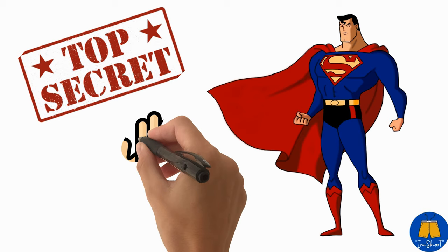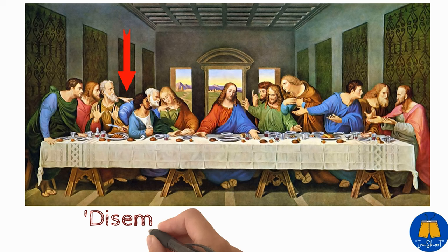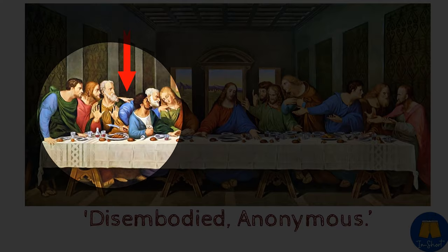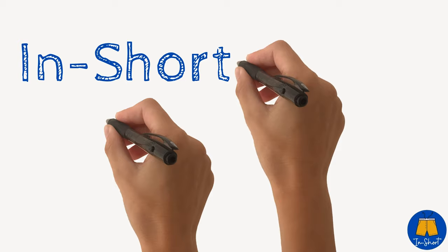Well, a bonus piece of information for those who are still with us. Dan Brown draws our attention to a spare hand described as disembodied, anonymous, belonging to no one at all. This hand is located between the third disciple from the left end of the table, and the next seated disciple. Why did Leonardo draw this hand? Well, we will leave that for you to think about.